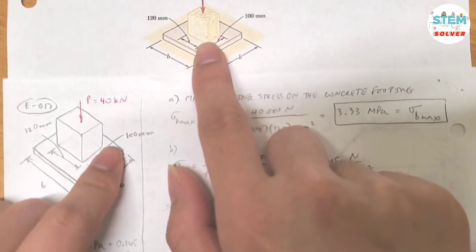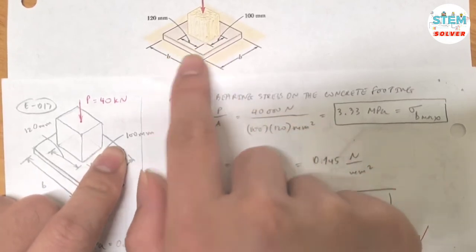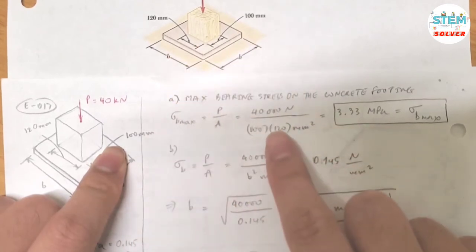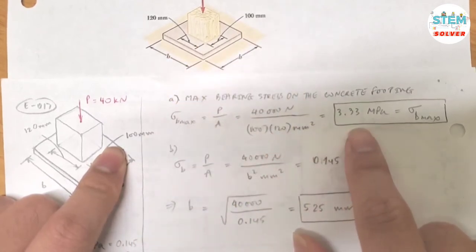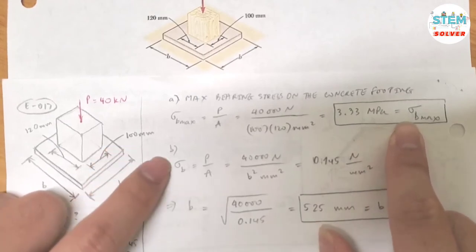As you can see, we have a square surface area. So the area is equal to 100 times 120. Then I got 3.33 MPa for the bearing stress, and that is also the maximum bearing stress for part B.